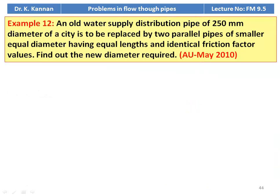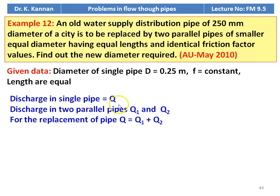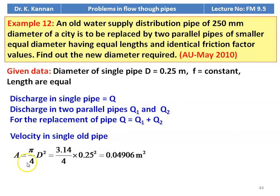Example number 12: An old water supply distribution pipe of 250 millimeter diameter of a city is to be replaced by two parallel pipes of smaller equal diameter, having equal length and identical friction factor values. Find out the new diameter required. This is from the May 2010 question paper. Diameter of the single pipe D equal to 0.25 meter, friction factor is constant, lengths are equal. Discharge in the single pipe is Q; discharge in the two parallel pipes Q1 and Q2. For replacement, total discharge Q equal to Q1 plus Q2. Area A equal to pi by 4 D square, equal to 3.14 divided by 4 into 0.25 square, equal to 0.04906 meter square.